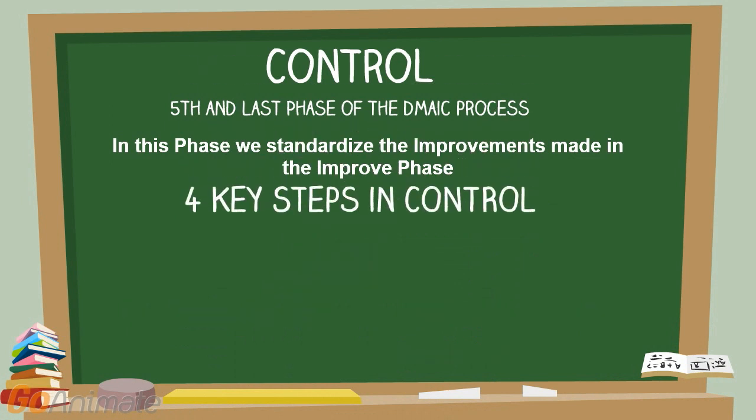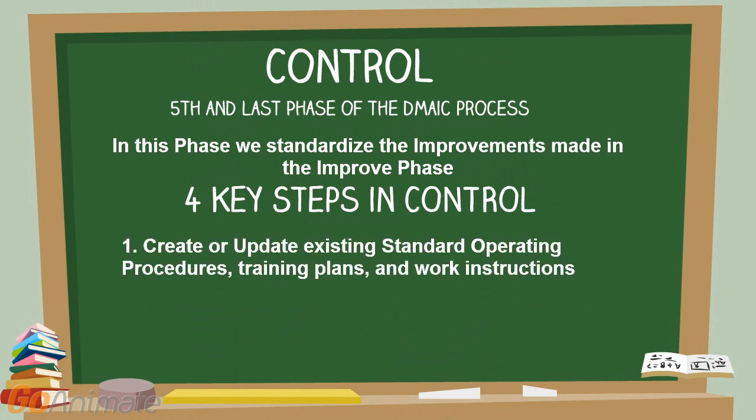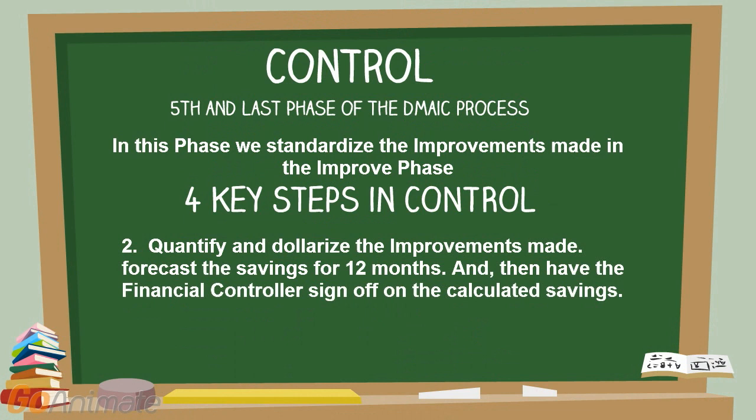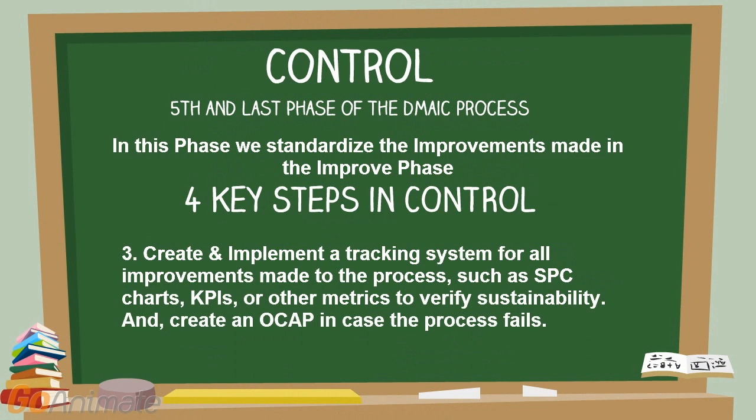If we summarize these activities into four steps, these would be: First, create or update existing standard operating procedures, training plans, and work instructions. Second, quantify and dollarize the improvements made, forecast the savings by 12 months, and have the financial controller sign off on the calculated savings. Third, create and implement a tracking system for all improvements, such as SPC charts, KPIs, or other metrics to verify sustainability.